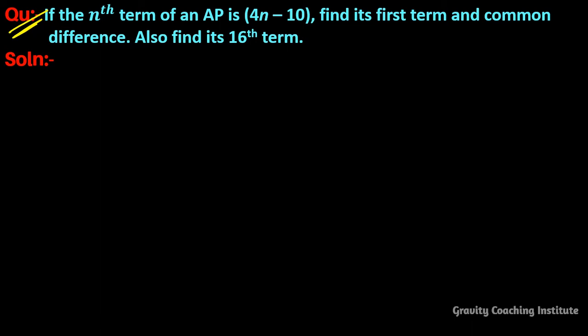Question: If the nth term of an AP is 4n minus 10, find its first term and common difference. Also find its 16th term. So here, given that its nth term is 4n minus 10, we need to find the first term, a equal to what, and common difference d equal to what, and its 16th term a₁₆ equal to what.